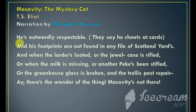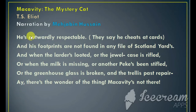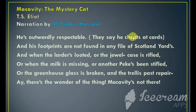The poet goes on to say: he is outwardly respectable. They say he cheats at cards and his footprints are not found in any file of Scotland Yard. The poet is saying that Macavity looks very respectable from outside — in other words, he seems to have an innocent face. They say that he cheats at cards, which again lends to the humor of this poem. And his footprints are not found in any file of Scotland Yard.